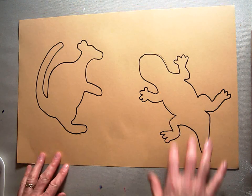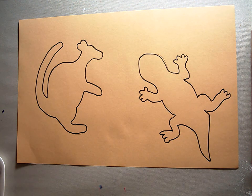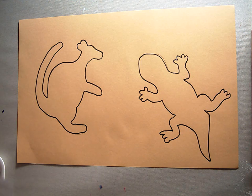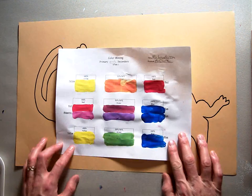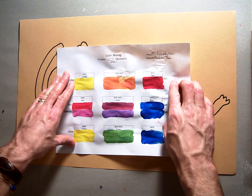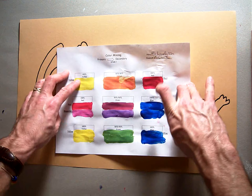For the next section of our project, we just finished tracing it, and now we're going to choose some colors to work with. In a previous session, we learned about colors. We learned that we have three primary colors: red, yellow, and blue.